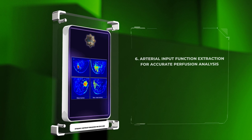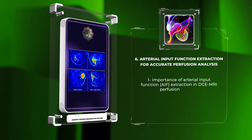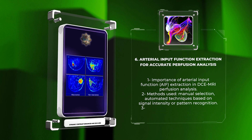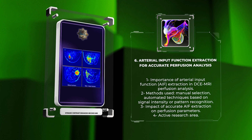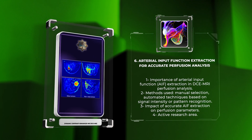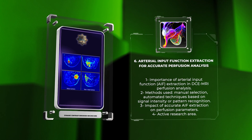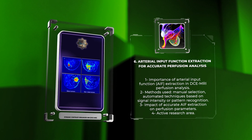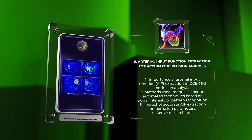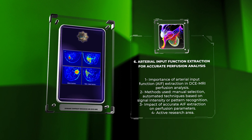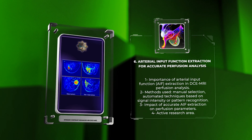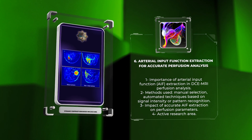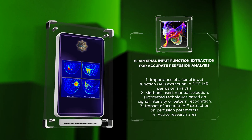In DCEMRI, the Arterial Input Function (AIF) extraction is important for perfusion analysis. Various methods like manual selection and automated techniques based on signal intensity or pattern recognition are used. Accurate AIF extraction greatly affects perfusion parameters and is an area of active research.